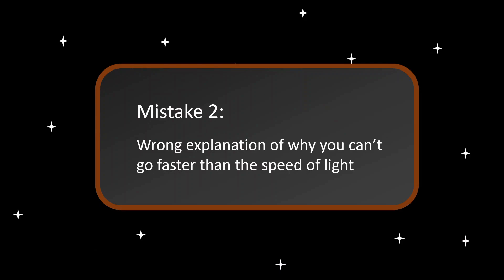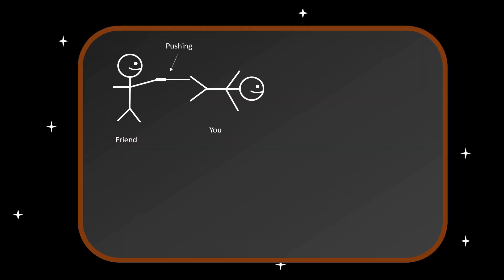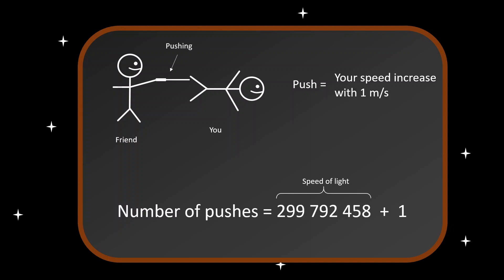Mistake number two is a wrongful explanation of why you can't go faster than the speed of light. Let's say you have a friend that can push you so your speed will increase by 1 m/s. After doing that this many times, shouldn't your speed then be greater than light's? The story goes: no, since your mass will increase, meaning a push will be less effective close to light speeds. Now this is almost correct, except nothing will increase the mass of the object.